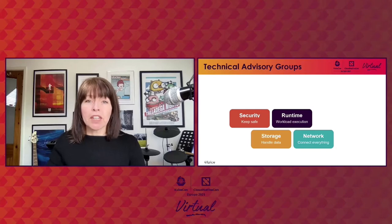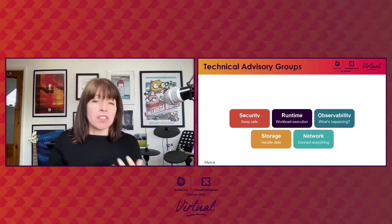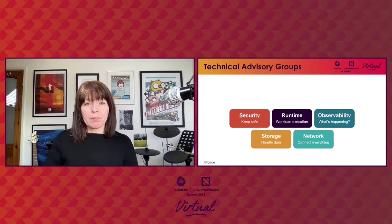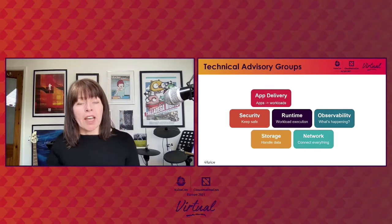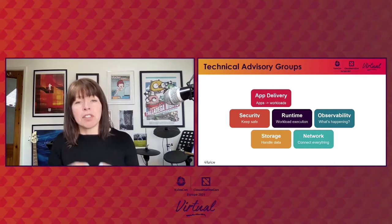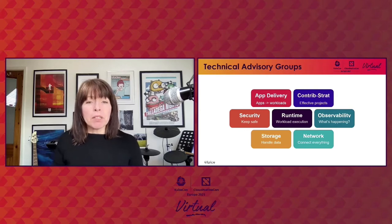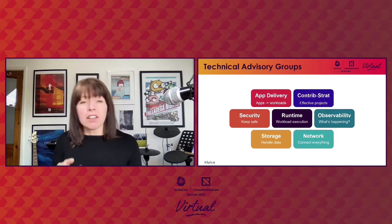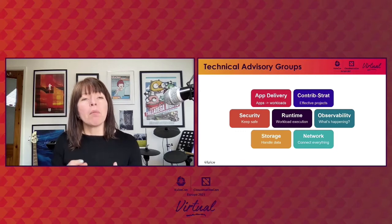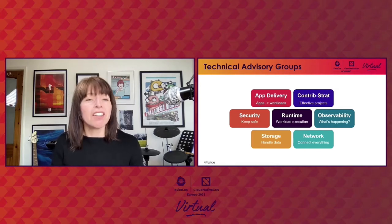The network TAG covers projects that allow workloads and control plane entities to communicate with each other. Once you have applications running in the cloud, you need to be able to see their status and troubleshoot issues, and that's covered by the observability TAG. App delivery is about bridging the gap between a developer writing code at a keyboard and that code being packaged and delivered as an application that can be run in the cloud. And contributor strategy is a special case — this TAG isn't involved with the technology of projects, but more about the way that projects run, helping projects run effectively and grow their contributor base.